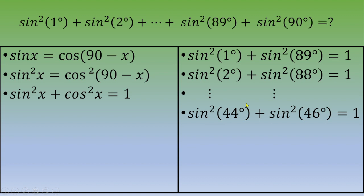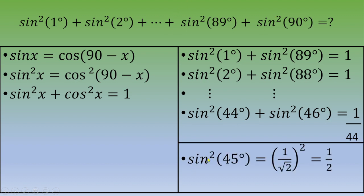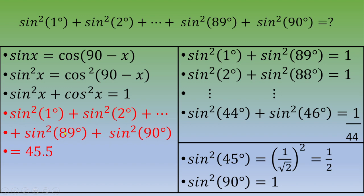We have 44 such pairs, giving us 44. There are two remaining terms: sine squared 45° = (1/√2)² = 1/2, and sine squared 90° = 1² = 1. So the total sum is 44 + 1/2 + 1 = 45.5. Thank you for watching this video, and I hope to see you in the next one.